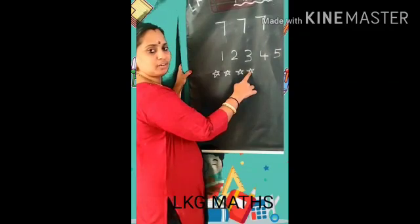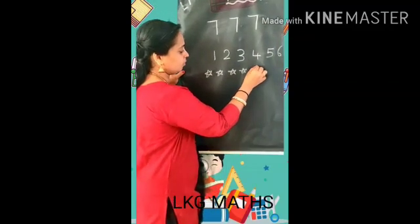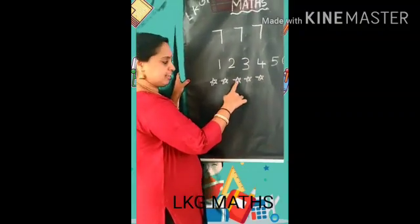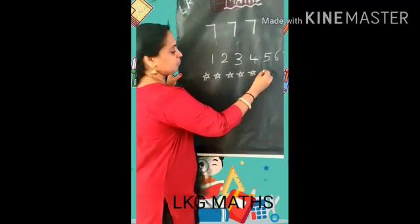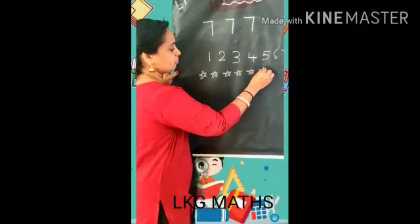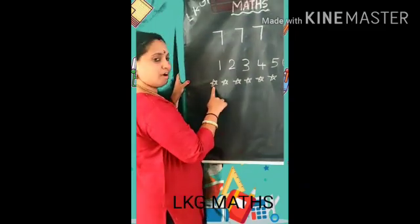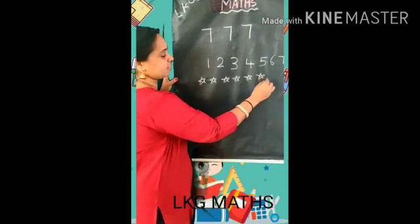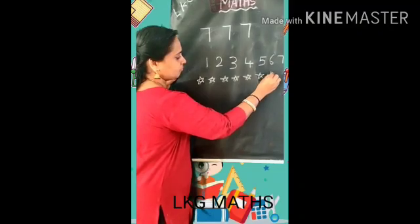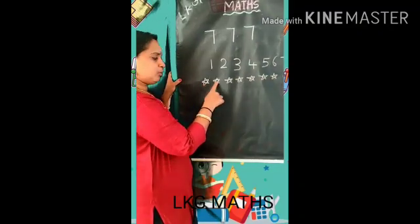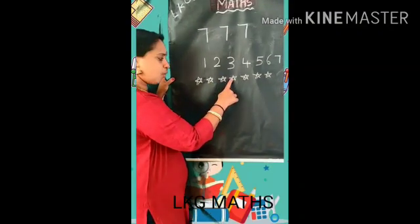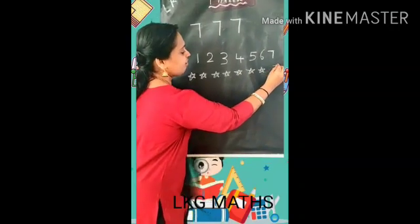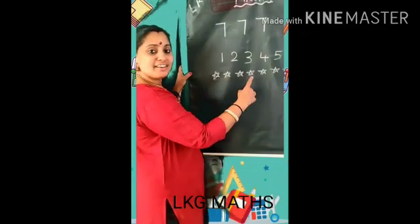4, 4. How many stars are there? 1, 2, 3, 4, 5. How many stars are there? 1, 2, 3, 4, 5, 6. How many stars are there? 1, 2, 3, 4, 5, 6, 7 — 7 stars. How many stars? 7 stars.